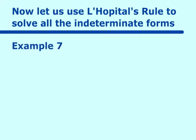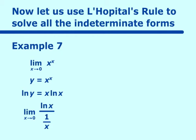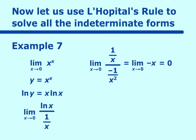Example 7: the limit as x approaches 0 of x^x, a 0^0 type. Set y = x^x, so ln(y) = x·ln(x). Convert to a fraction: ln(x)/(1/x). Taking derivatives gives (1/x)/(−1/x²) = −x. As x→0, this equals 0. So ln(y)=0, and y = e⁰ = 1.